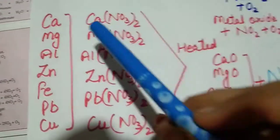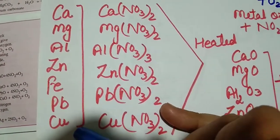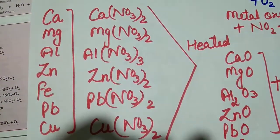Next category of metals: calcium, magnesium, aluminium, zinc, iron, lead and copper. These are their corresponding nitrates.